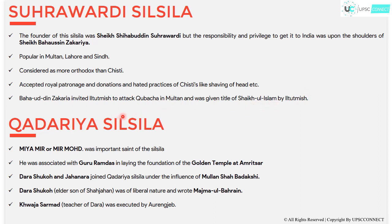The next order is the Kadariya Silsila. The main saint was Miamir, also known as Mir Muhammad. Associated with him was Mullan Shah Badakshi, whose influence reached the Mughal royal family — Dara Shukoh and Jahan Ara joined the order. Dara Shukoh was of a liberal nature and wrote extensively, but his teacher Khwaja Sarmad was executed after Aurangzeb came to power.